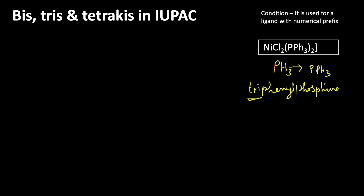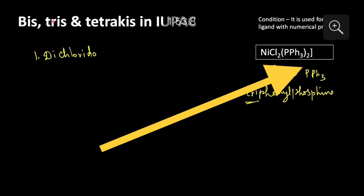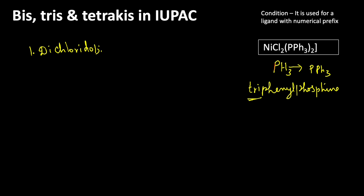For this compound, there are two ligands. One is the Cl group — written as dichlorido, because it is an anionic ligand. Then, there are two triphenylphosphine ligands, so we use bis. If there were three groups we would use tris, and for four groups tetrakis. Here we use bis, and the ligand it represents is written inside parentheses — bis(triphenylphosphine).